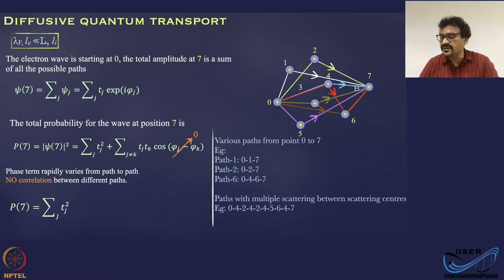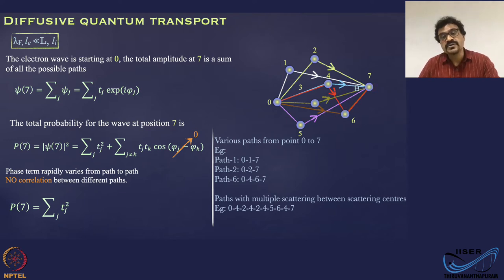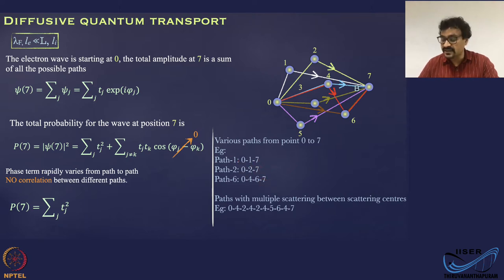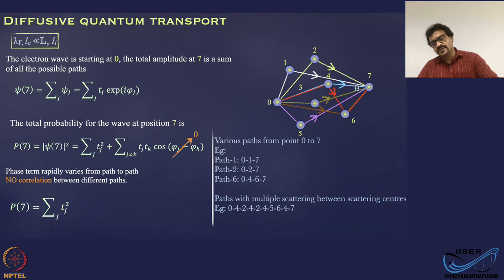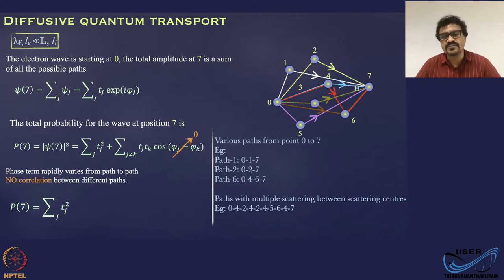I have labeled 7 possible paths out of many — paths going 0→1→7, 0→2→7, 0→3→7, 0→3→6→7, 0→5→7, 0→6→7, and so on. There are also paths where the electron undergoes multiple scattering between points, such as 0→1→7, 0→2→7, 0→4→6→7, or even 0→4→2→4→2→4→5→6→4→7 in a completely random manner. The electron can undergo many scattering events and still reach point 7, and this is true for electrons shuttling between any two points.